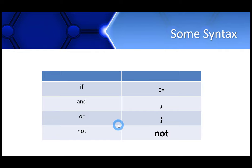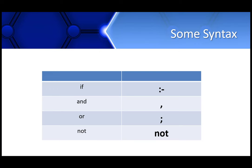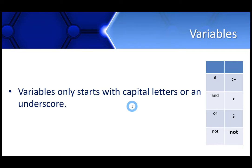Now let's look at the syntax of a Prolog program. This is the syntax of some very basic operators in Prolog that you should always remember. For 'if' we use the symbol colon-hyphen (:-), for 'and' we use a comma, for 'or' we use a semicolon, and for 'not' we use the keyword 'not'. Regarding variables: in Prolog, variables always start with a capital letter or an underscore. A variable can be a single letter, but it will always start with a capital letter or an underscore. I have included this table on every slide so you can memorize it quickly.